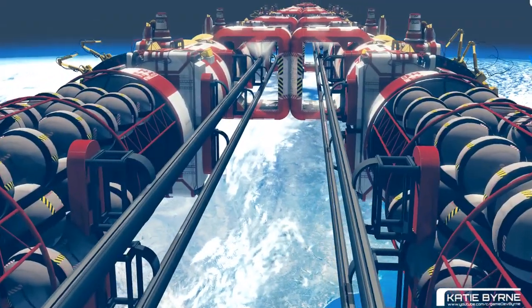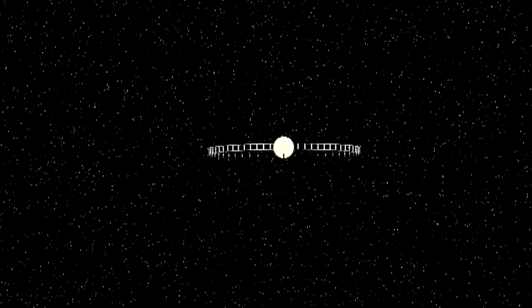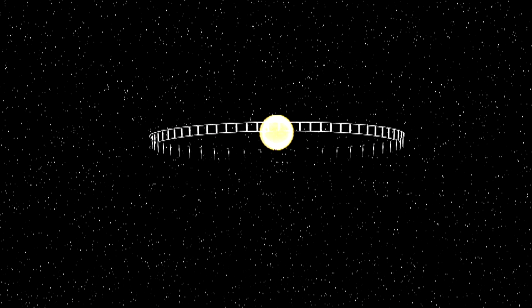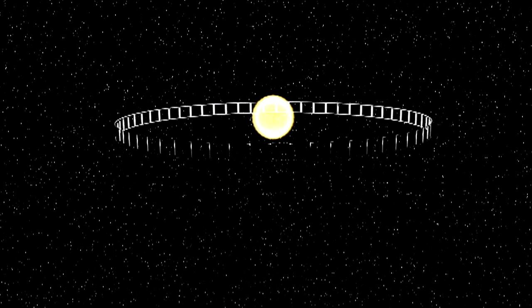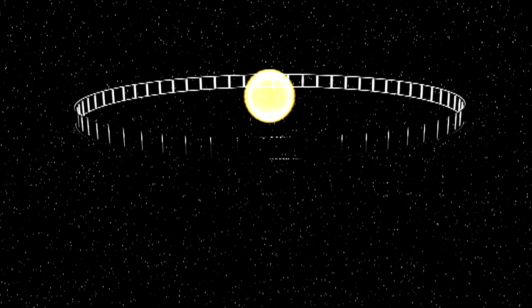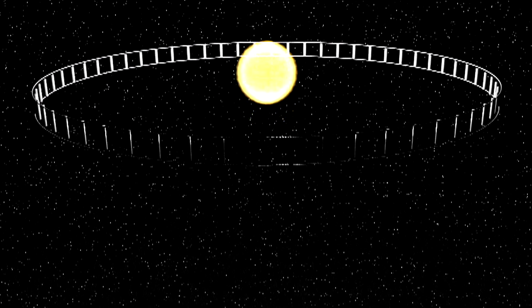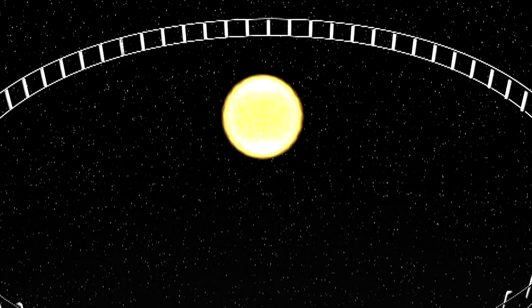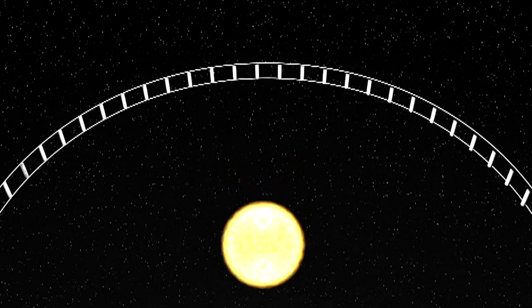We have a type of megastructure called a rung world, which is like a ring world but looks more like a ladder wrapped around in a circle, in this case around the Sun. The individual rungs of the ladder are rotating habitats, each connected in that circle by either a cable or even a full-blown one-loop topopolis, a kind of super long thin rotating habitat we've discussed in passing before.